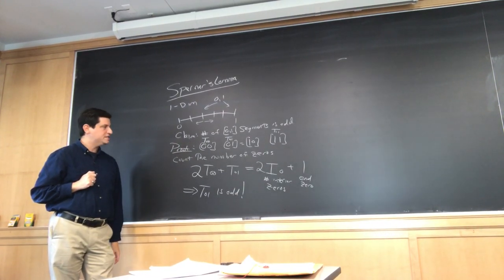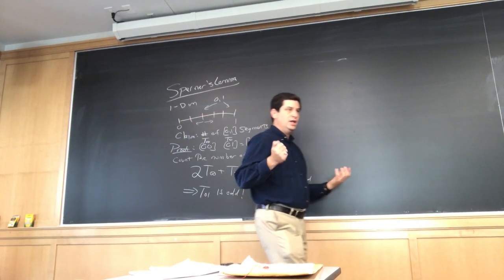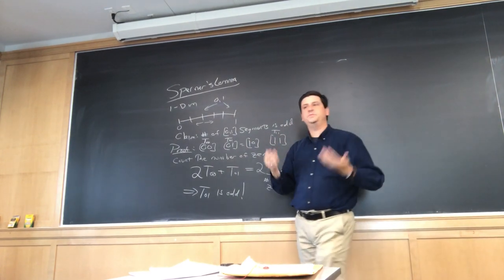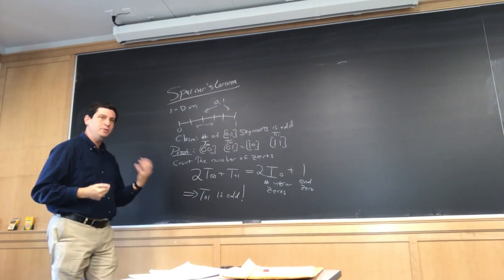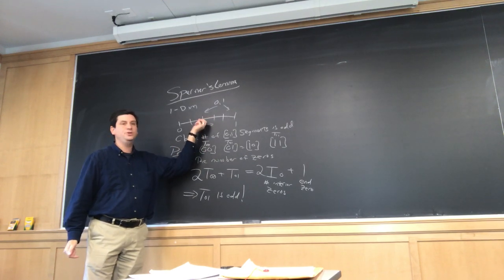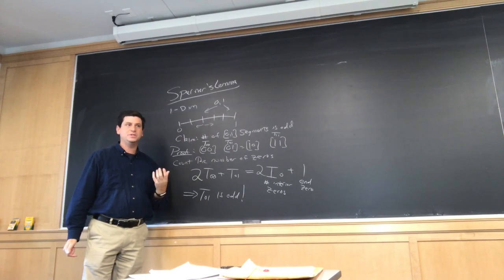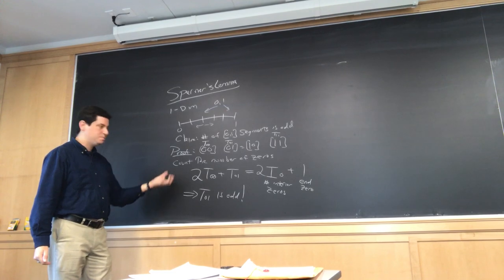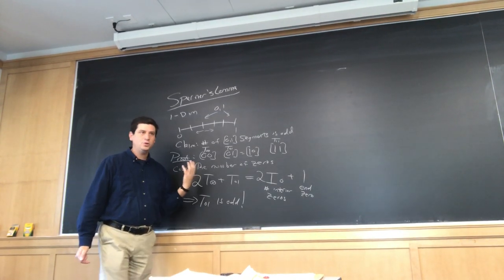So it's a really slick, elegant proof. We had proofs of this before. Last time we showed that as we went through, we could prove that there has to be at least one segment. That was easy. We also showed that there had to be an odd number of segments by using the mono-variance. That as we add a new point and put in a new label, we change the number of 0,1 segments either by 0 or by 2. Here's another way of doing it. Explicitly bringing into account the even oddness. Any questions about this?